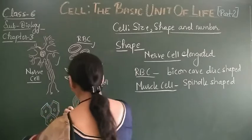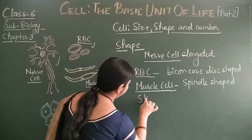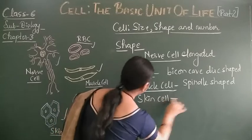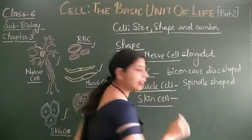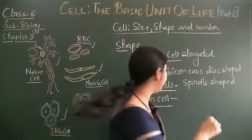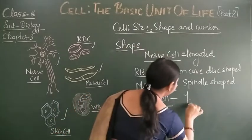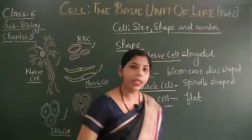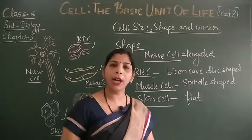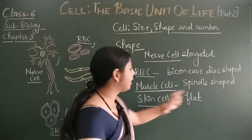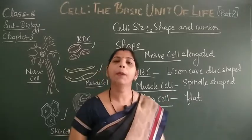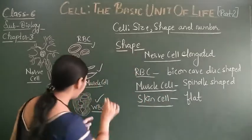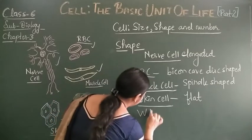Next is the skin cell. Skin cells are flat, as you can see. They are flat because the skin acts as a protective barrier, and flat cells help provide that protection.